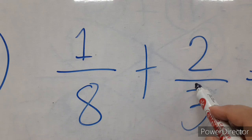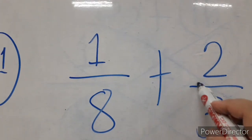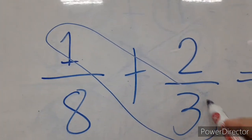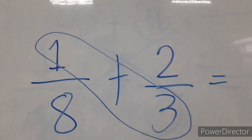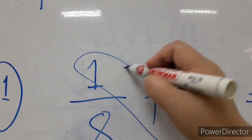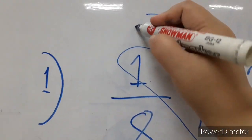So first, let us cross-multiply. So 1 times 3 is 3. Let's put here 3.